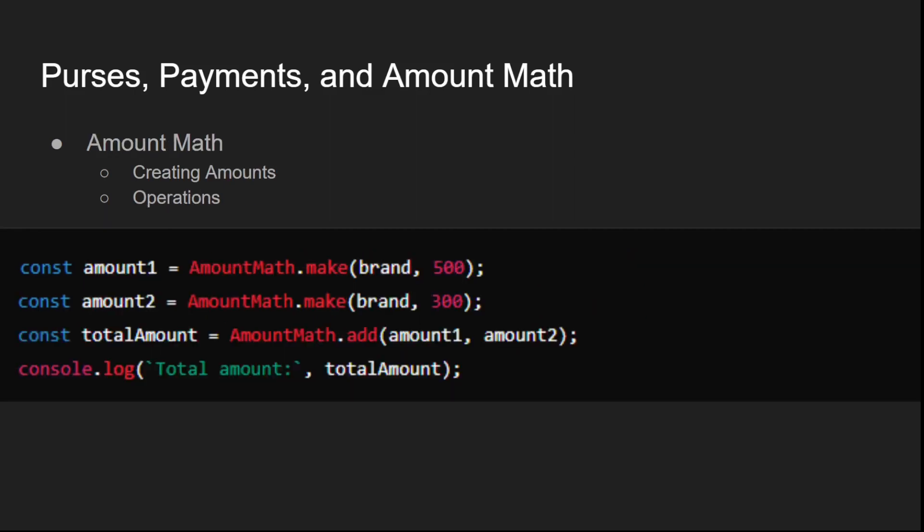The amount math library is used to perform precise calculations and comparisons with digital assets, ensuring that all operations involving asset amounts are accurate and secure. Use amount math.make to create amounts for a specific brand. Use amount math methods like add, subtract, and isGreaterThanOrEqualTo to perform operations on amounts.